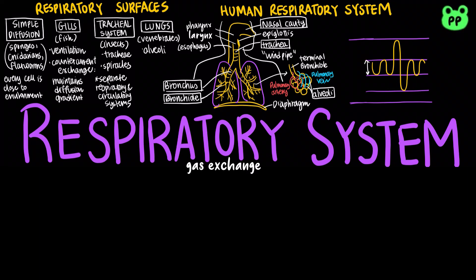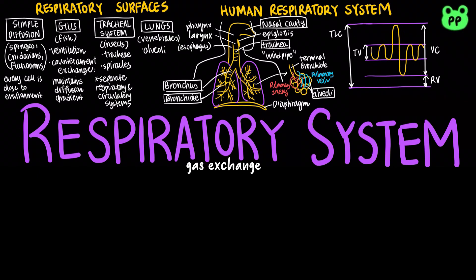The tidal volume is the volume of air inhaled with each breath. The vital capacity is the maximum tidal volume, and the residual volume is the air remaining after exhalation. The total lung capacity can be calculated by adding the vital capacity and the residual volume. Lung cells produce surfactant that lowers surface tension, which keeps the alveoli from collapsing after exhalation.